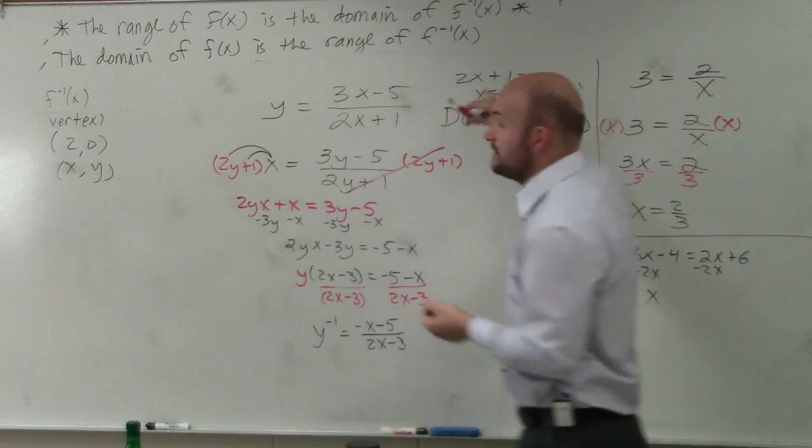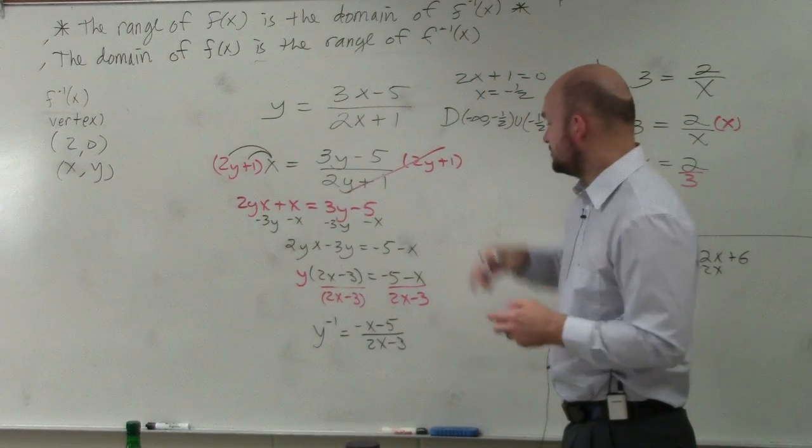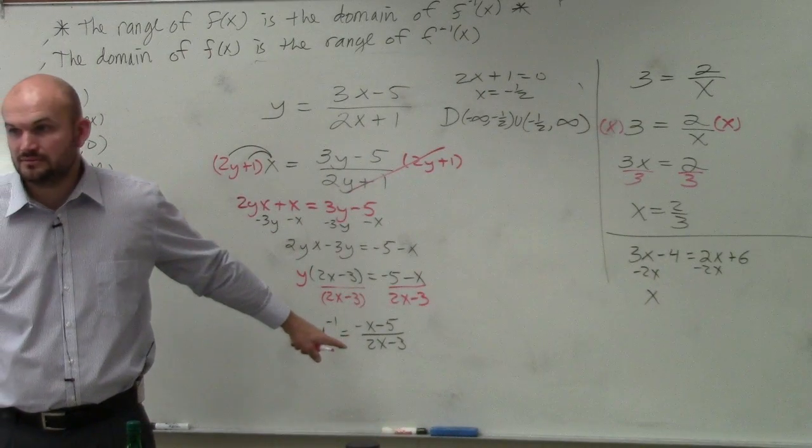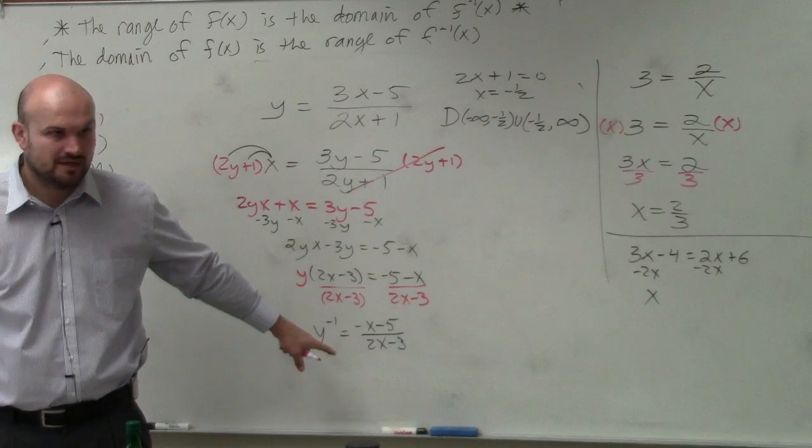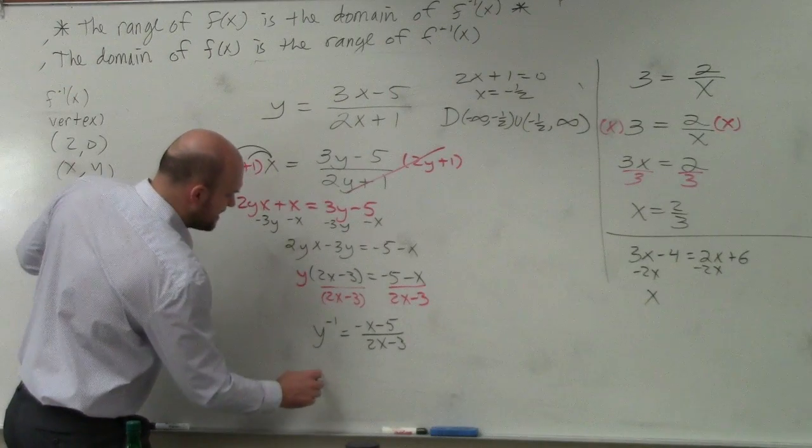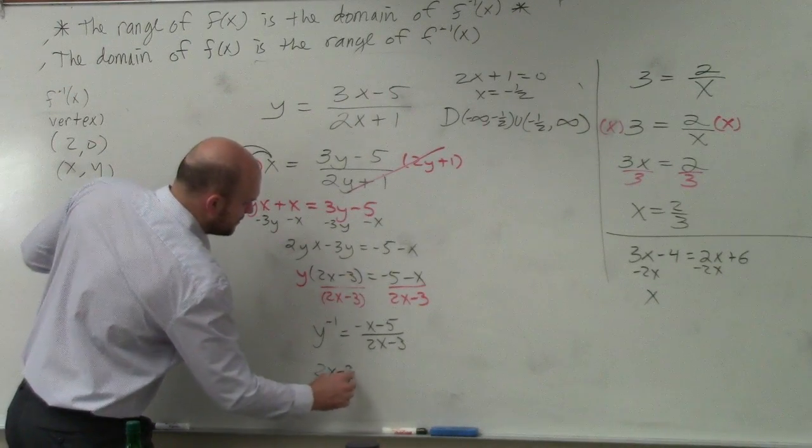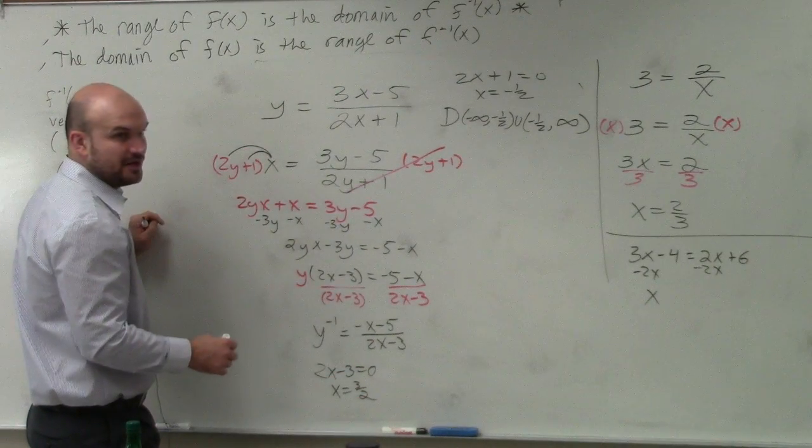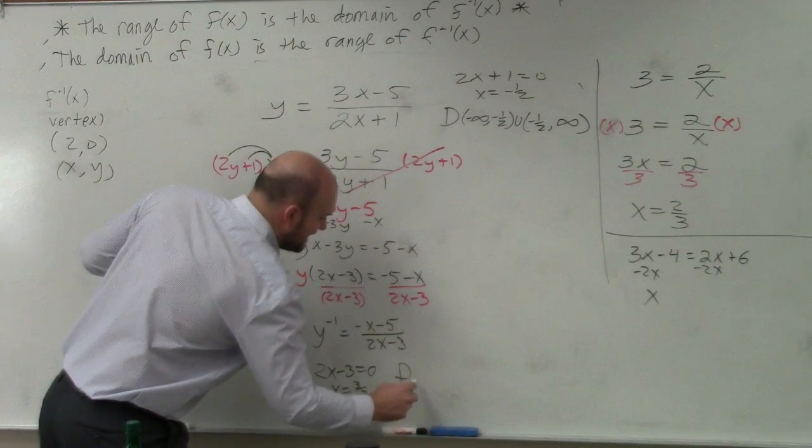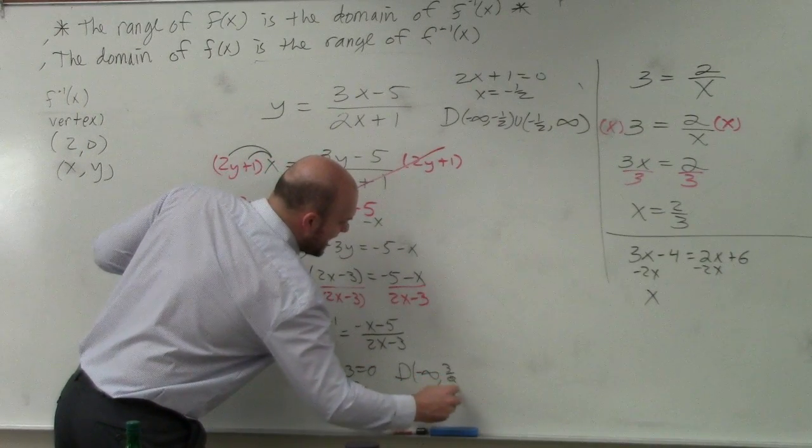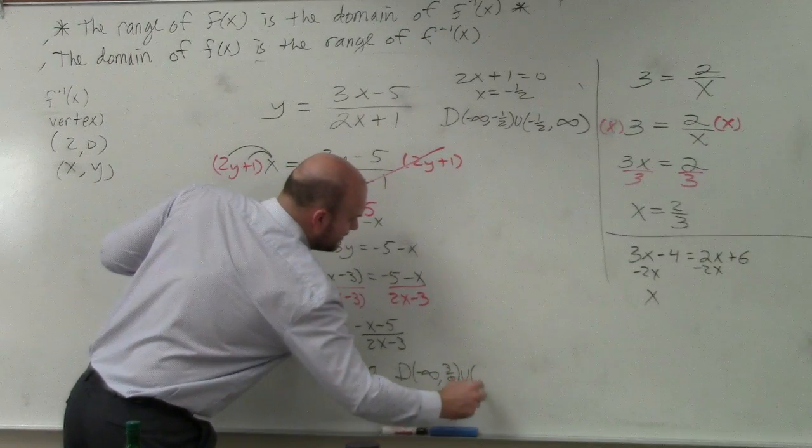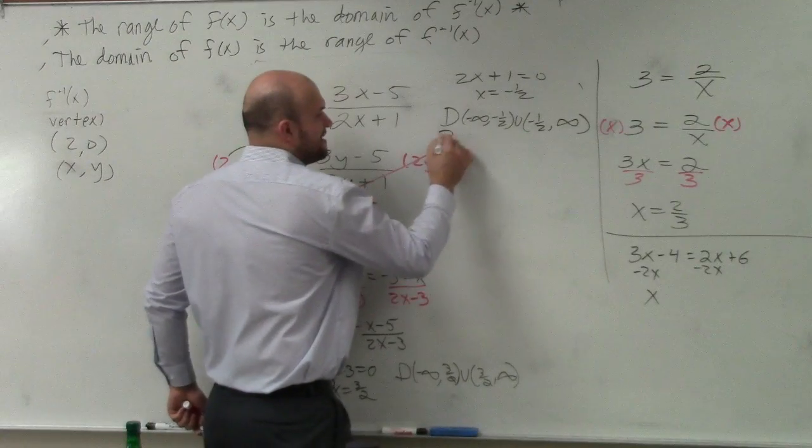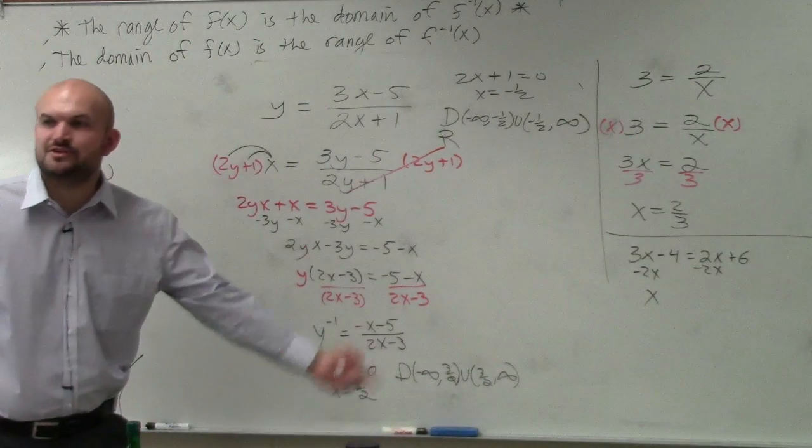Now again, we're still wanting to find the domain and range of my original function, right? So I need to find the domain of here. So can I divide by 0? What values can I divide by 0? Well, let's set our denominator equal to 0. And when x equals 3 halves, my denominator is equal to 0. So I'd say my domain is negative infinity to 3 halves union 3 halves to infinity. So guess what my range is? My range has to be the exact same as my domain for my inverse.